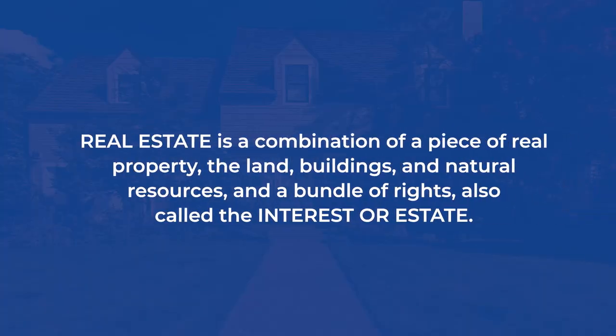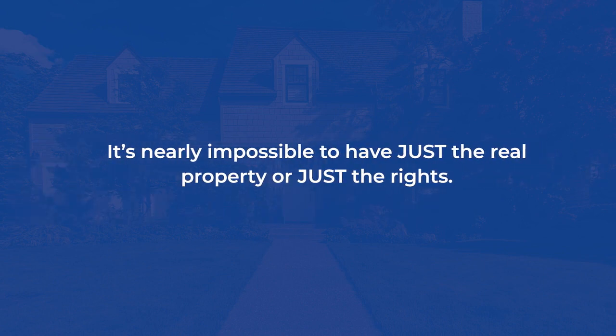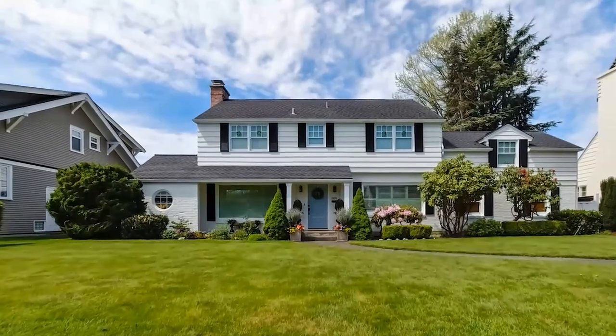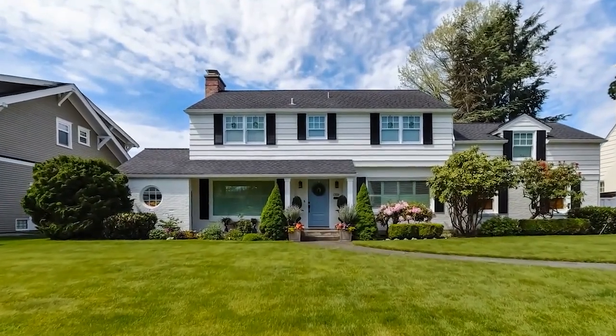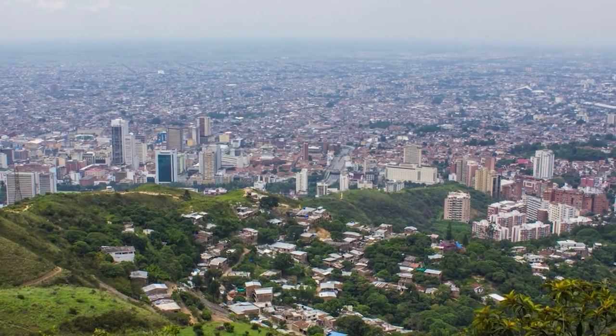To wrap up, real estate is a combination of a piece of real property — the land, buildings, and natural resources — and a bundle of rights, also called the interest or estate. It's nearly impossible to have just the real property or just the rights; the two are fundamentally linked. But we can look at both parts of the real estate whole to see how they work. Now that we've established what real estate is, we can move on to a deeper discussion of property value.